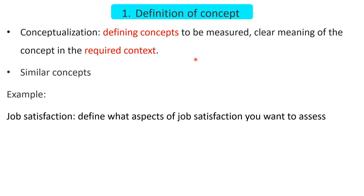The first step is the definition of the concept or variable that we want to measure in our research. We have to clearly understand and provide a clear meaning of that particular concept according to the required context, because in different contexts a single concept may have different meanings. To do that, we have to assess similar concepts from the existing literature. For example, if we take job satisfaction, we have to understand its definitions according to our context.